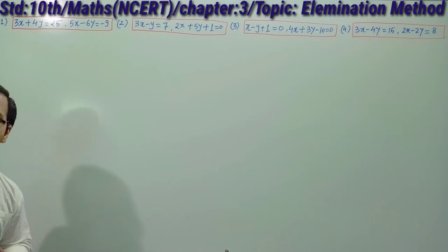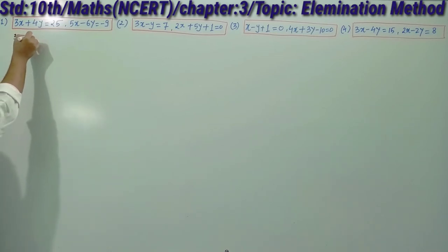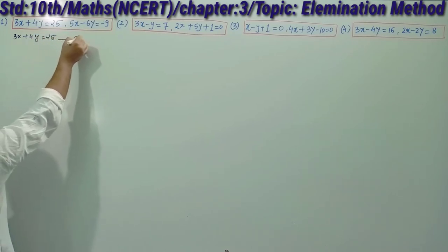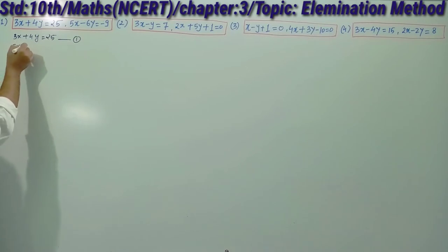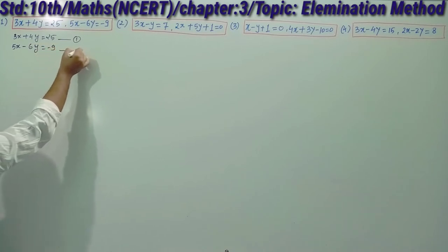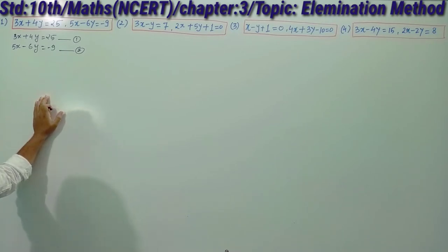Students, here you can see that 3x plus 4y is equal to 25 — this is equation number 1 — and 5x minus 6y is equal to minus 9 — this is equation number 2. Certain things you will have to keep in mind whenever you are solving a pair of linear equations with two variables using the elimination method. Elimination means you will have to eliminate the value of x or y.